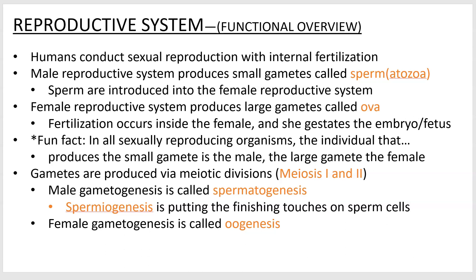The gametes are produced through meiotic divisions — meiosis 1 and 2. I'll mention those later, and there's a big video about it in the video folder. Spermatogenesis is male gametogenesis, and oogenesis is female. There's also a term spermiogenesis, which is where we're getting rid of some extra organelles and making the sperm motile — that's a second process that occurs after spermatogenesis. Notice that spelling difference.